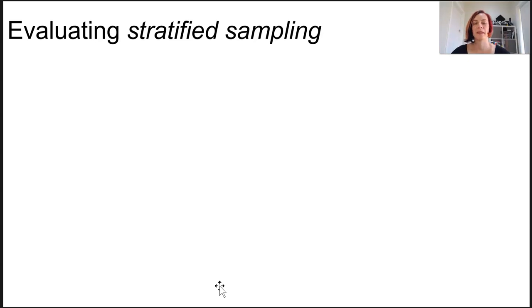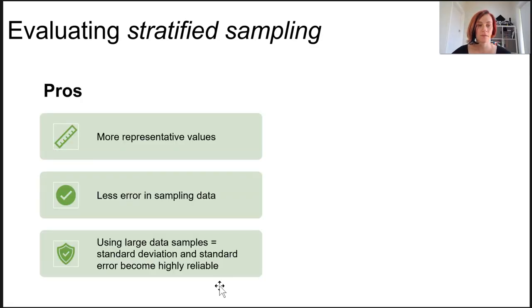To evaluate stratified sampling, it's a really complex situation. Understanding the biotic and the abiotic relationships in an ecosystem and the tolerance ranges of different organisms is dependent upon the accuracy of the data, but this is quite a complex sampling method. It has more representative values, there's less error in your sampling data, and it uses a large data set. They're all the good things.